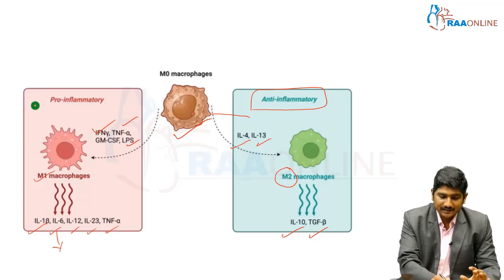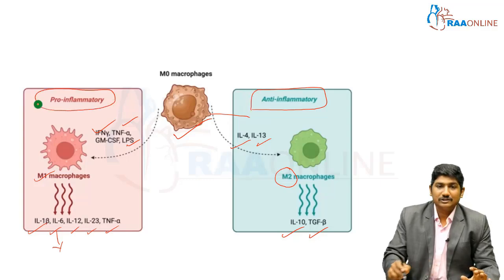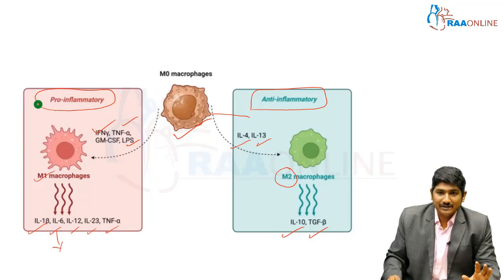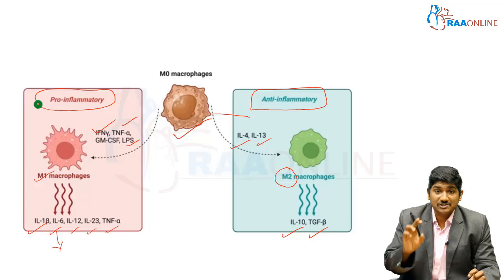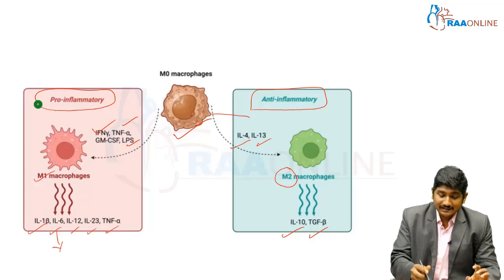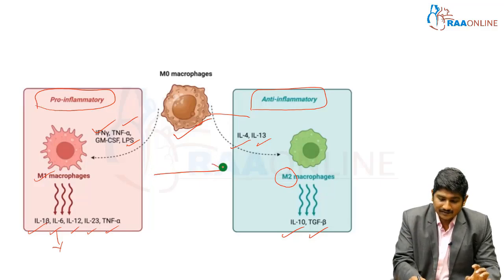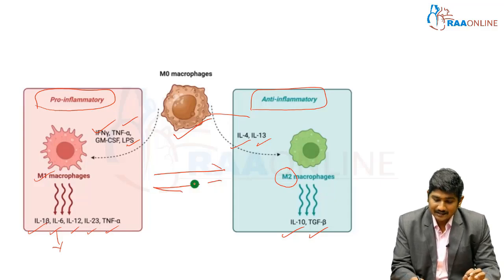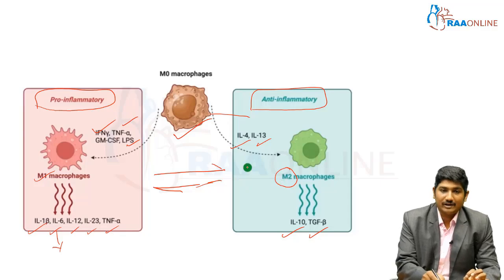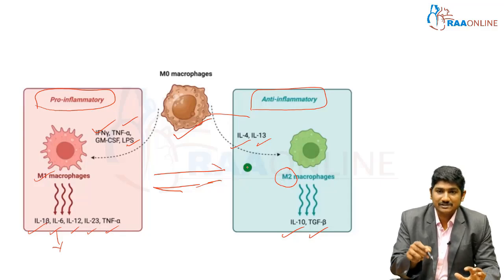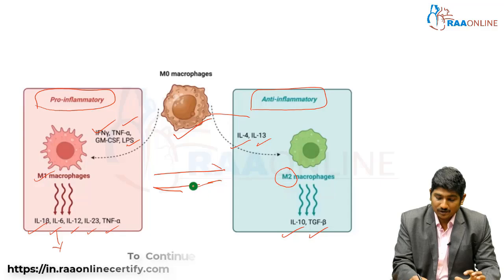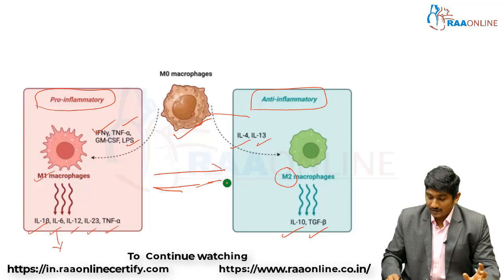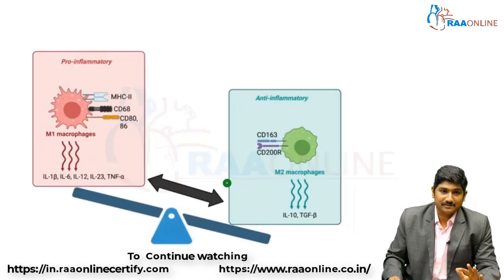A macrophage can be switched between pro-inflammatory and anti-inflammatory states — I use the word 'switched' rather than 'converted' to emphasize that this is bidirectional. Once a macrophage has become M2, it can still be converted back to M1 with a proper stimulus. Similarly, M1 macrophages can also be converted to M2.